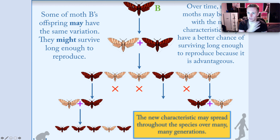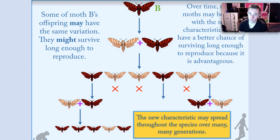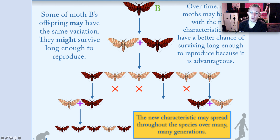Now, focusing on moth B, because moth A is dead, some of moth B's offspring may have the same variation. So this is moth B. Moth B has the children here. Some of them also have the darker colour, which we know is good because it allows them to hide. They might live long enough to then have children of their own. Moth B has two offspring with the darker colour. They survive.